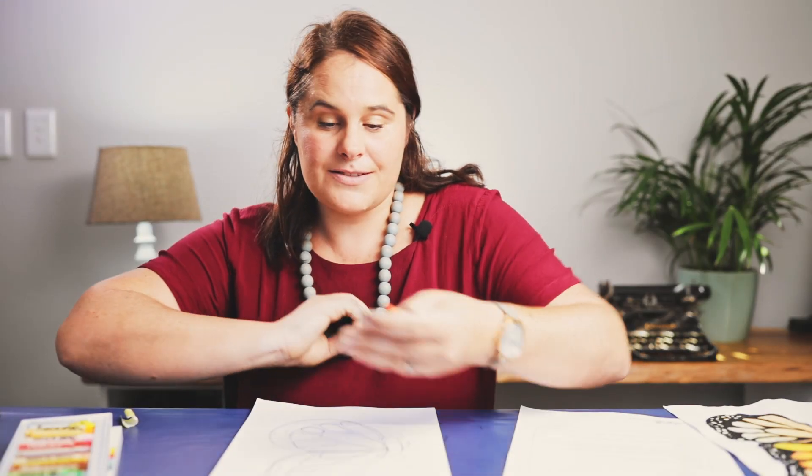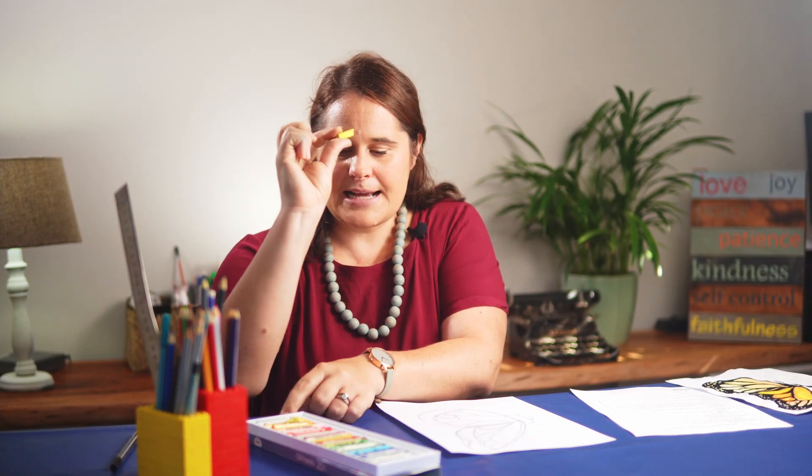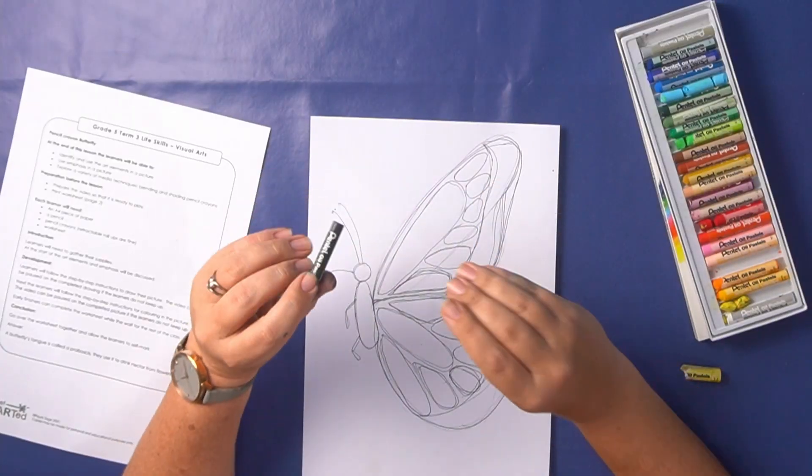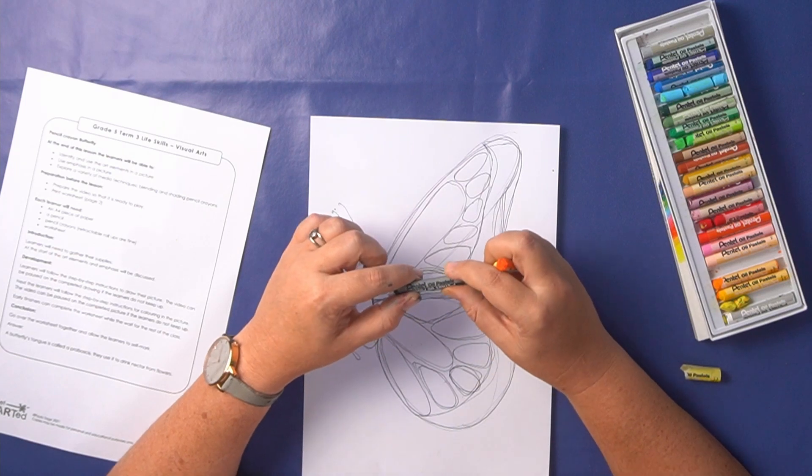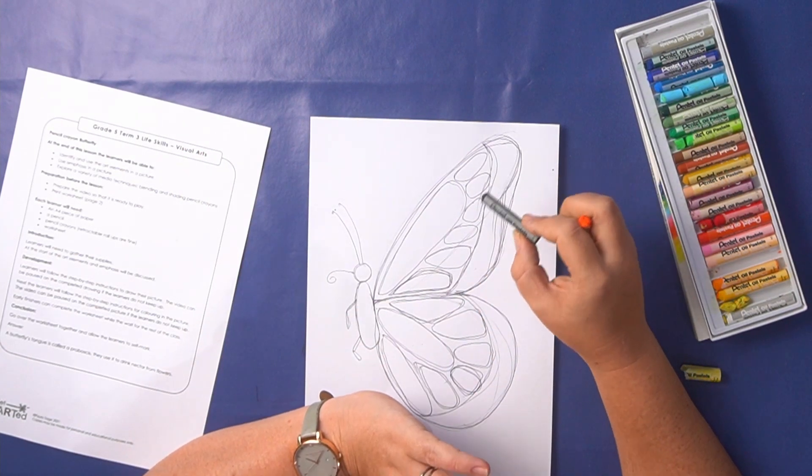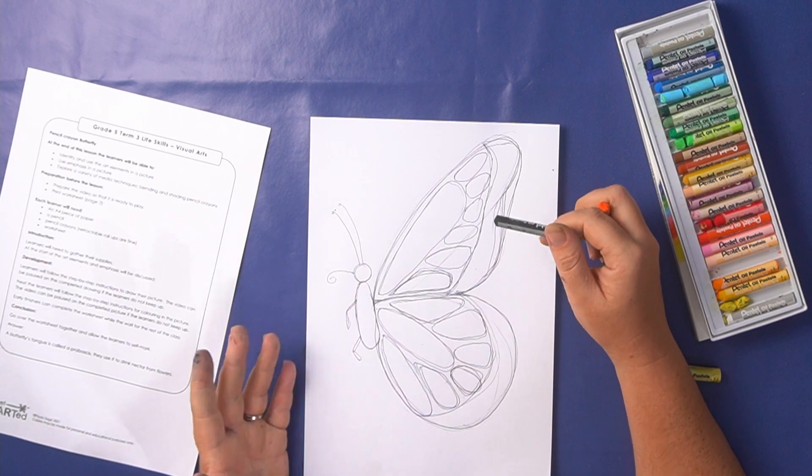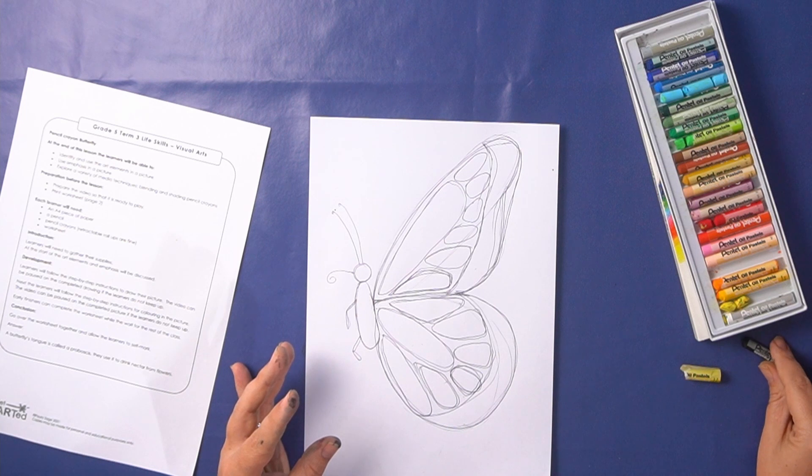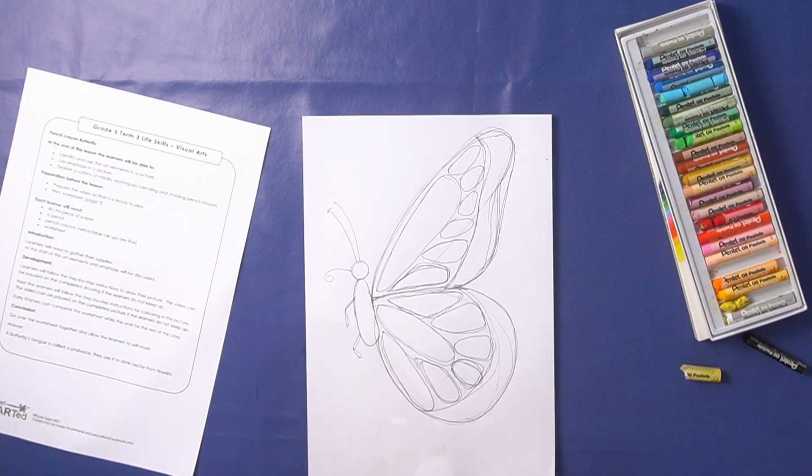Right we only need three pastels to color this picture in. We need a nice dark orange, if you have the same pastels as me that is orange number three, and I'm using my brightest yellow, it's called lemon yellow and it's number one, and then our black. Now black can look really nice on a picture but if you start with black it ends up smudging into the rest of your colors and making everything look a little bit dirty. So we're going to put our black aside for now and we'll finish off our picture with that black.